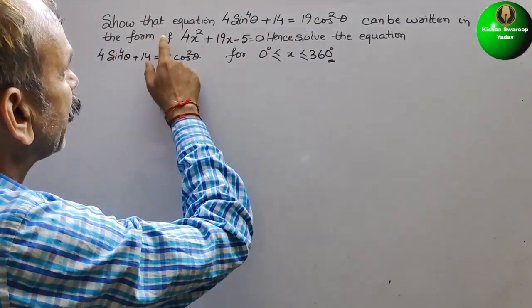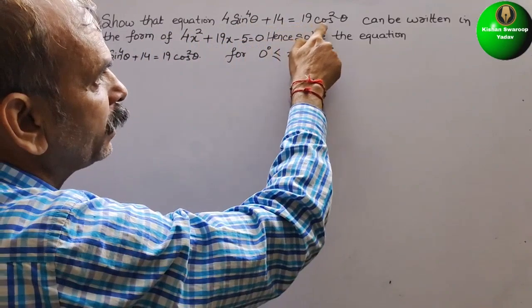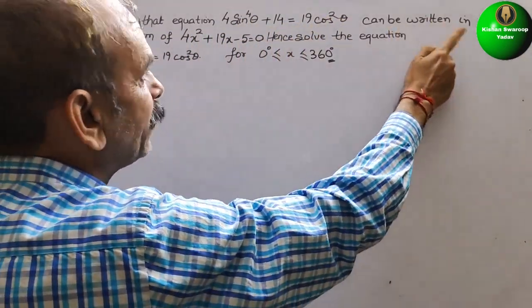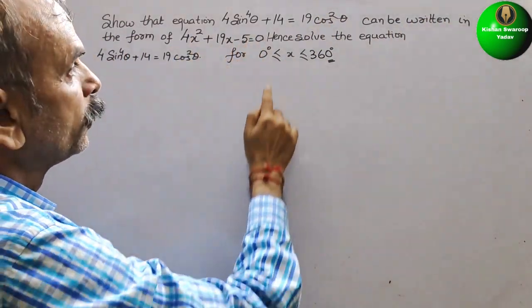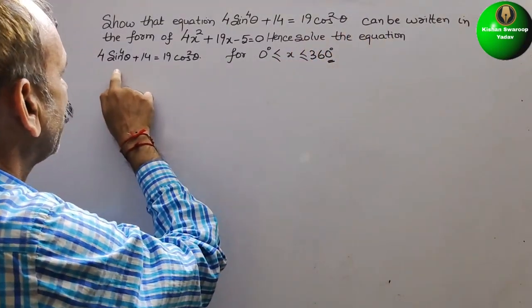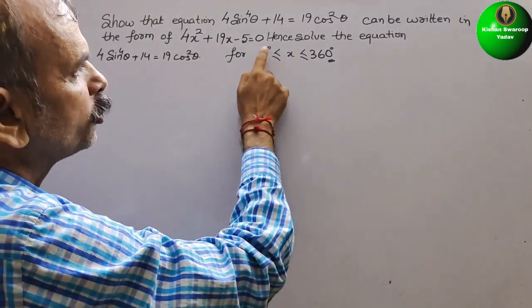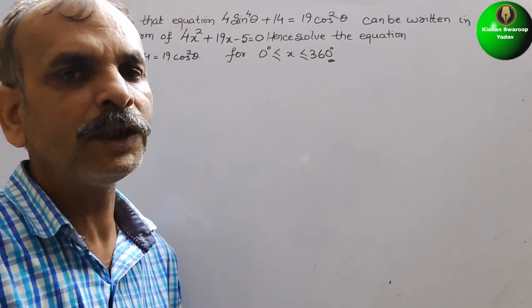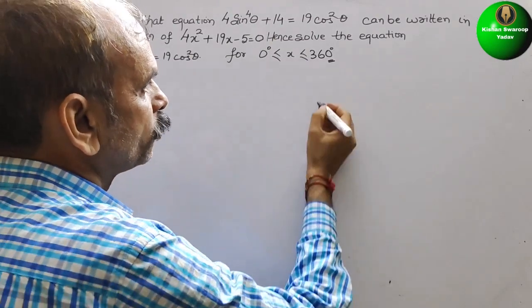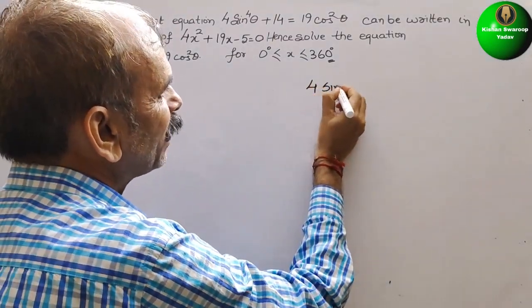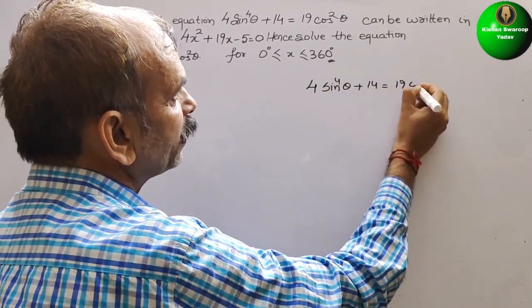Your question is: show that the equation 4sin⁴θ + 14 = 19cos²θ can be written in the form 4x² + 19x − 5 = 0. Hence, solve the equation 4sin⁴θ + 14 = 19cos²θ for 0° ≤ θ ≤ 360°.